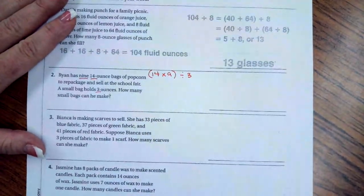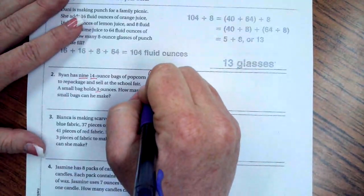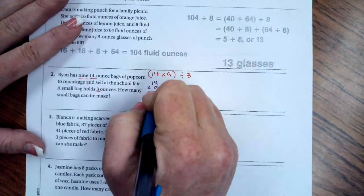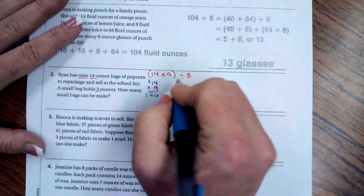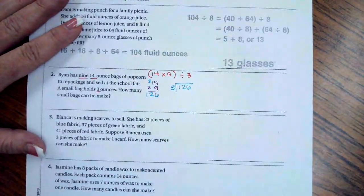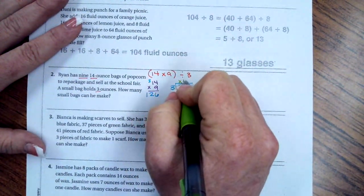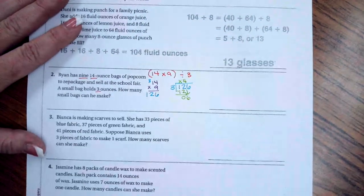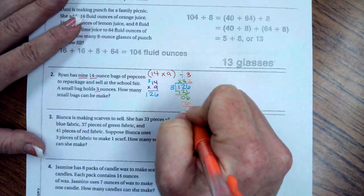Splitting it up means we have to divide. So we're going to start with 14 times nine. Nine times four is 36, carry my three. Nine times one is nine, plus three is 12. So now I have 126 ounces, and I need to divide that up by three. Three goes into not one. Three goes into 12 four times. Four times three is six. Subtract, get zero.